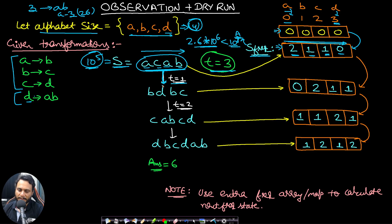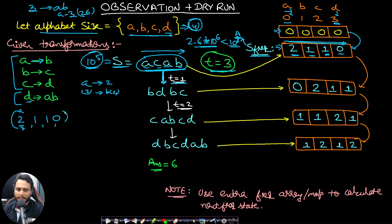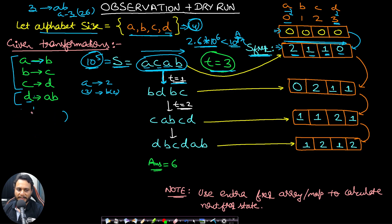In each transformation with state [2, 1, 1, 0], we iterate character by character. Since a appears twice, it contributes two b's. If we update the same array in-place, modifying b's count before processing b causes incorrect results — the previous value has been modified. That's why we take an extra next_frequency array initialized to all zeros to store the transformed state.